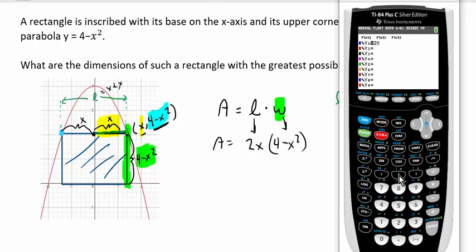Type in 2x, parentheses, 4 subtract x squared. Now I'm going to set up my window by pressing the window key.